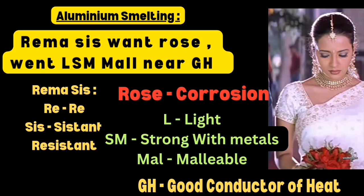Then take the word LSM: L stands for light, SM stands for strong — meaning when aluminium is mixed with other metals it becomes strong. Then MALL represents malleable. GH represents good conductor of heat. So these are the properties of aluminium: resistant to corrosion, light, strong with metals, malleable, and a good conductor of heat.